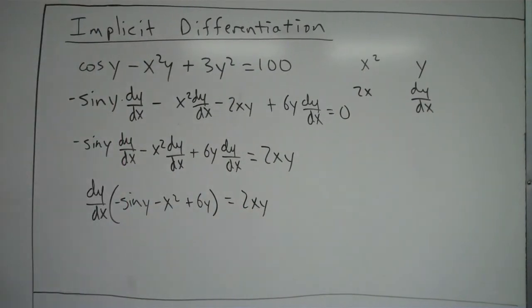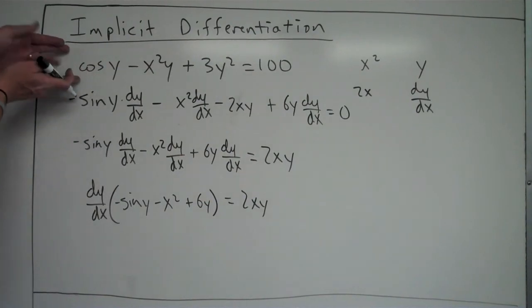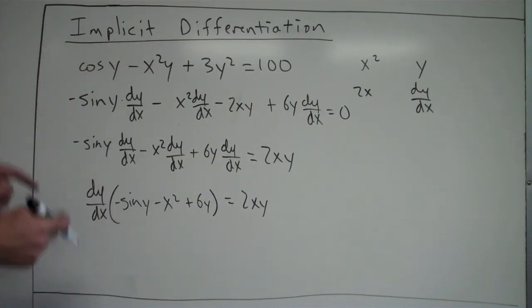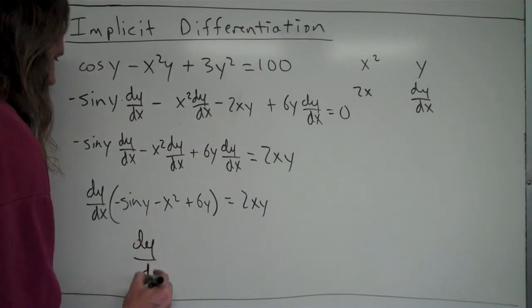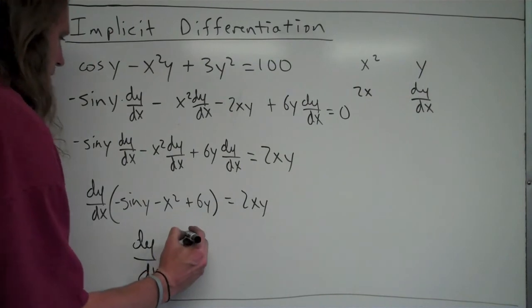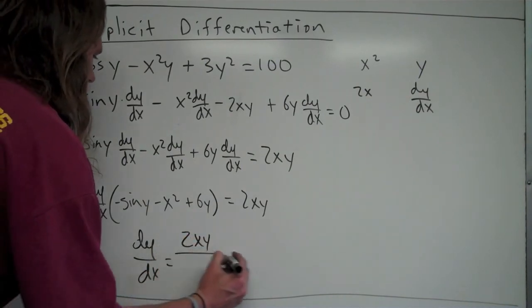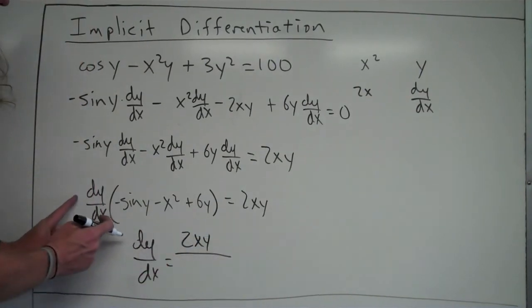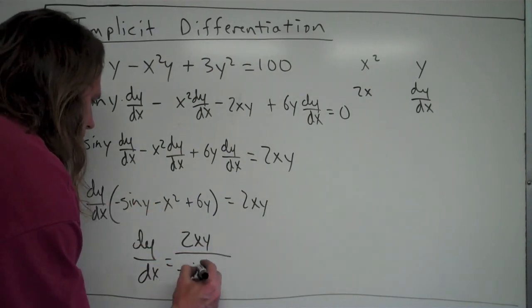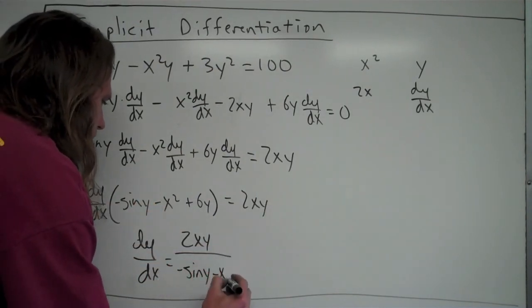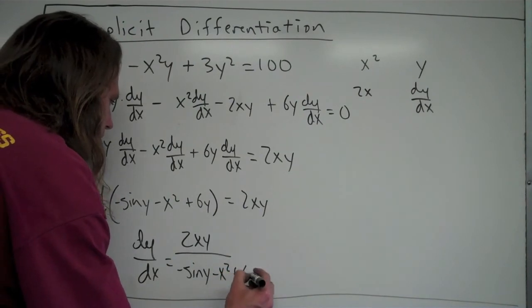Alright, so then, my goal here from the beginning was to find the derivative of this implicitly defined function. The derivative is dy over dx, so right here I'll get dy over dx by itself. Okay, so it's going to be 2xy over, and the way I'm getting it by itself is dividing by this and bringing it over here, so it's over negative sine y minus x squared plus 6y.